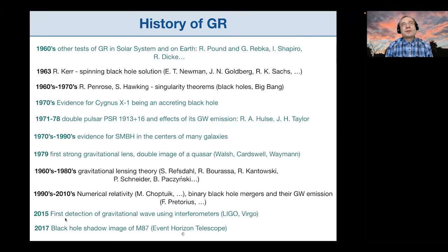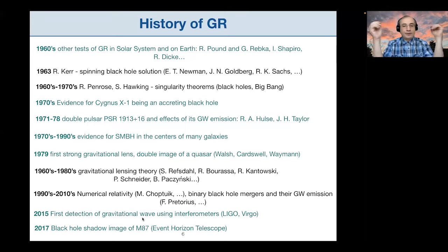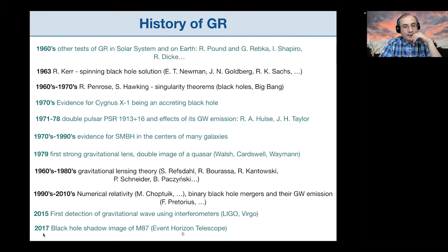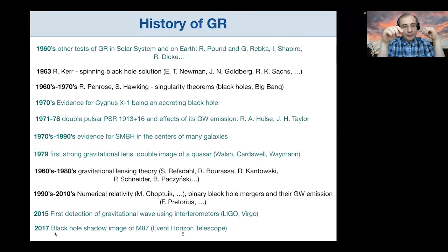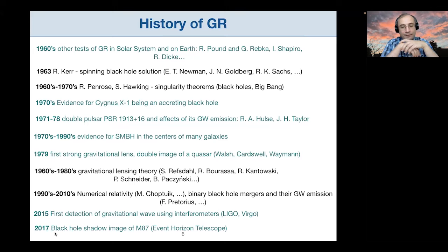This was first achieved by Frans Pretorius in the early 2000s. Thanks to this discovery, researchers produced waveforms of various types of black hole mergers, which were crucial in the first detection of gravitational waves — which happened in 2015, with the paper released in 2016, done using interferometry. In 2017 another very important discovery: the Event Horizon Telescope managed to image the black hole shadow of the galaxy M87.